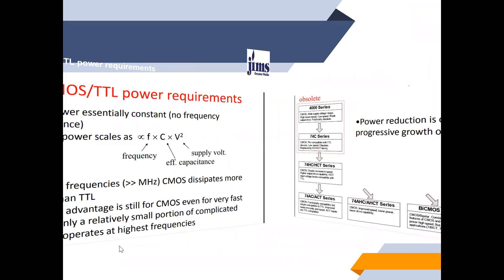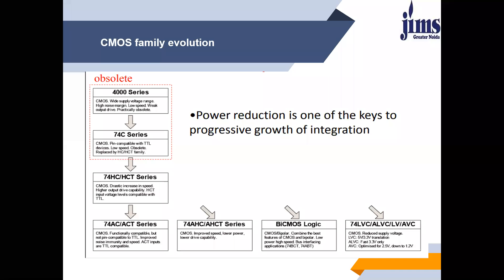The CMOS family evolution goes: first the 4000 series, then 74C, 74HC, 74AC, and so on. BiCMOS is a good combination of bipolar and CMOS transistors and is still being used today. It is the most preferable combination because it has the benefits of both bipolar transistors and CMOS transistors. This concludes the overview of CMOS logic families.